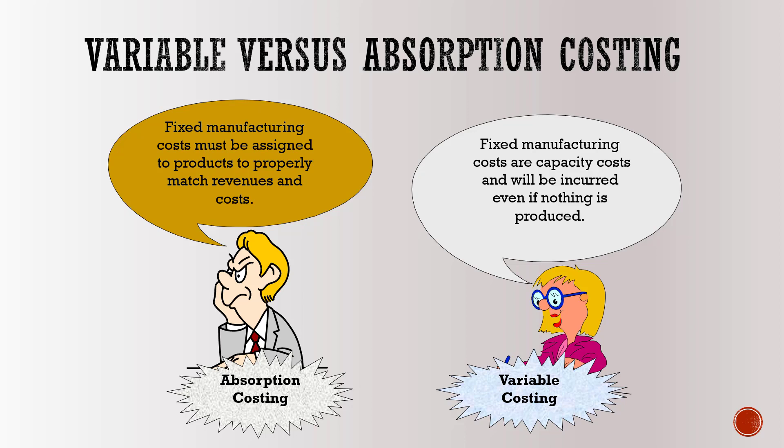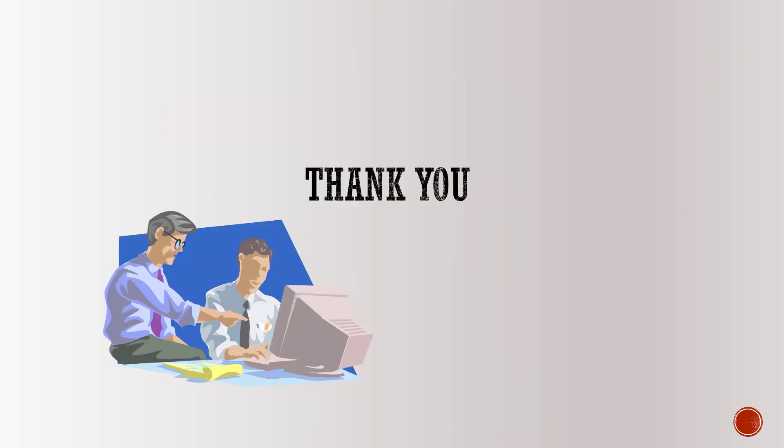The final verdict: under absorption costing, fixed manufacturing costs must be assigned to products to properly match revenues and costs. Under variable costing, fixed manufacturing costs are treated as capacity costs that will be incurred even if nothing is produced. That's all for now — thank you.